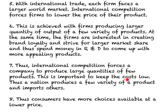To keep costs low, a nation produces a few varieties of a product and imports others. For example, the US Boeing company produces aircraft, so the US exports aircraft but also imports aircraft from Europe's Airbus. From the consumer's perspective, they have more choices available at a lower price. This is how intra-industry trade is explained using monopolistic competition and economies of scale.